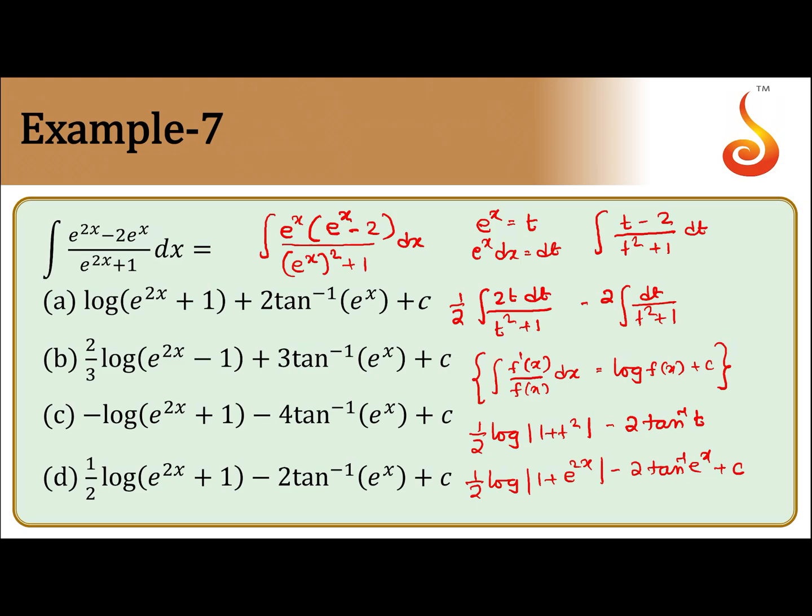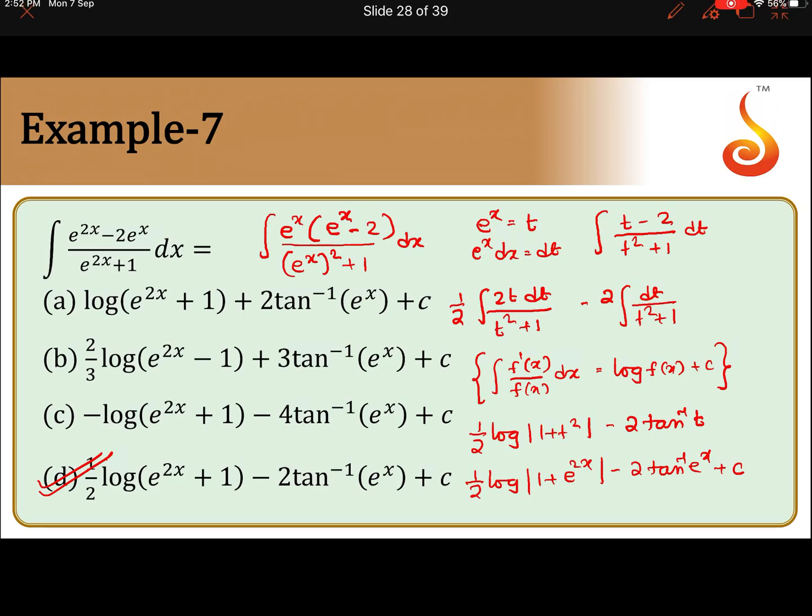So if we observe option d, option d will come: 1 by 2 log e to the power 2x plus 1, minus 2 tan inverse e to the power x, plus c.